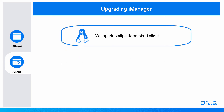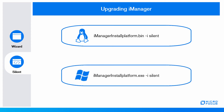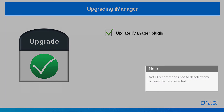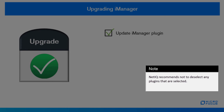On a Linux machine, use this command to run the silent properties file. On a Windows machine, use this command to run the silent properties file. After you upgrade iManager, ensure that you update the iManager plugins to match the version of iManager. By default, the upgrade program selects the plugins that need to be updated. NetIQ recommends that you should not deselect any plugins that were selected.